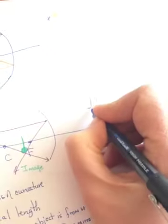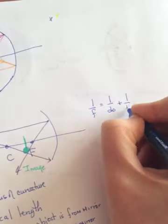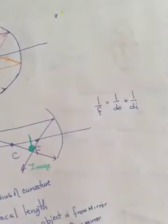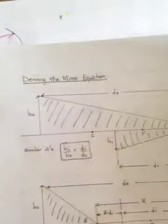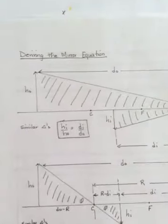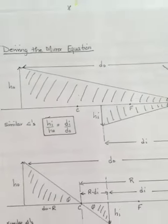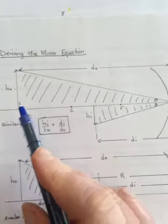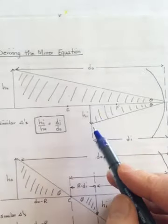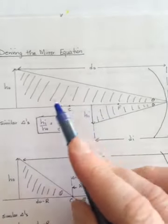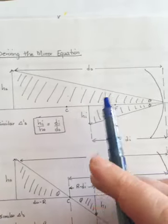It's one over the focal length is equal to one over DO plus one over DI. Now, I could derive it for you if you wanted me to. It's right here. So the top diagram shows my object here. It has some height HO. And my image here is some height HI. And clearly, it's a real image because it's on the same side as the mirror as the object. And it's inverted.